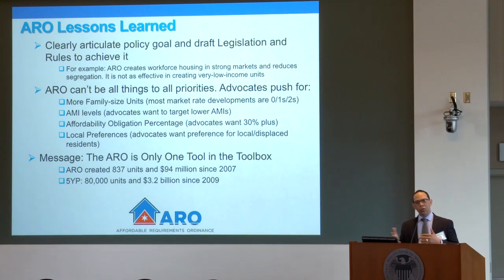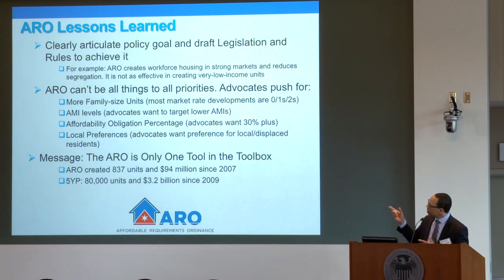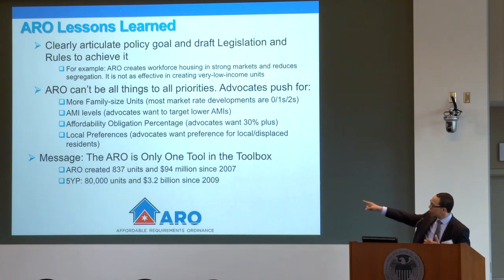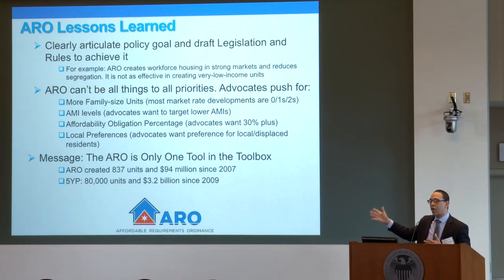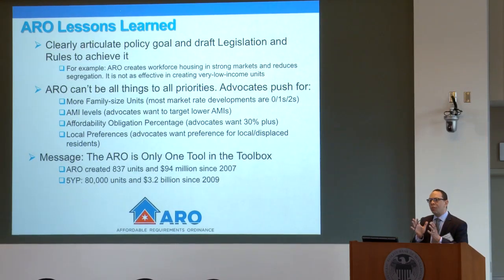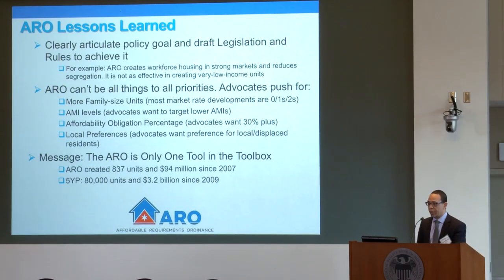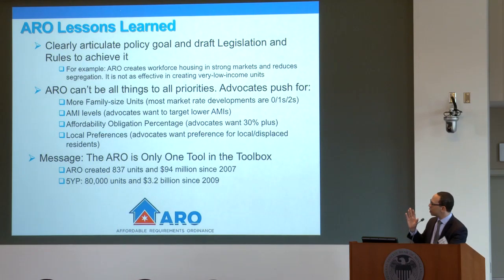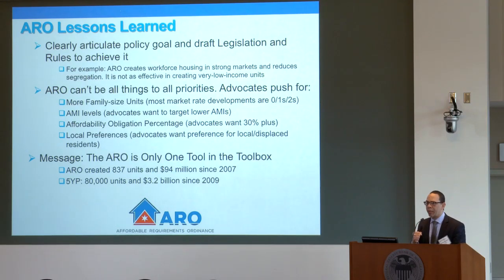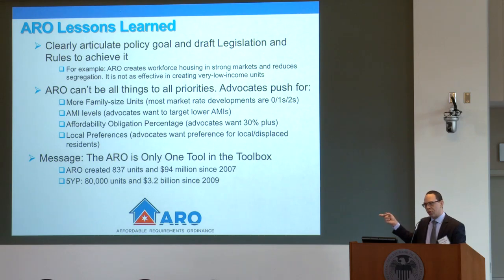This gets back to what's the purpose of the ARO. Since 2009, we've spent and leveraged about $3.2 billion in Chicago and created about 80,000 units. During that same period, our inclusionary zoning created just under 900 units. So you understand it's not even our main tool for the creation and preservation of affordable housing — it just seems to be the sexiest. You have to remind people that if there's a need for 30% AMI family-sized units, the ARO may not be the tool we need. We may need a different tool.